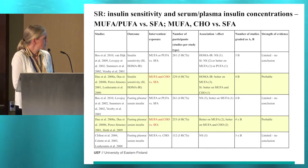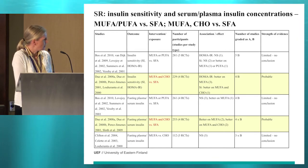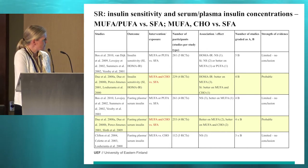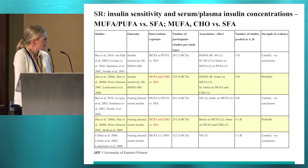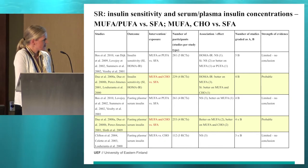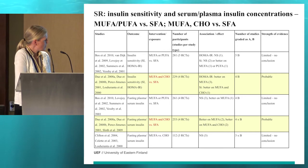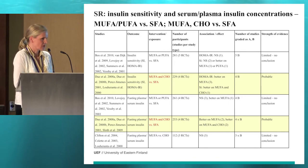Regarding insulin sensitivity and serum or plasma insulin concentrations, we found that those diets enriched in monounsaturated fat compared to saturated fat increased insulin sensitivity measured by insulin sensitivity index or HOMA-IR, and the level of strength of evidence was considered as probable. The same goes with fasting plasma or serum insulin concentrations.